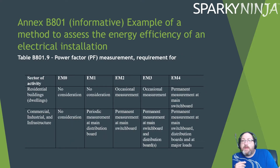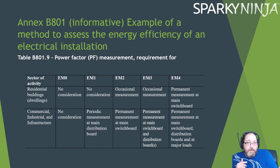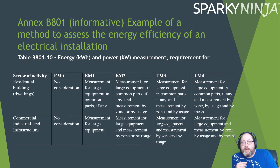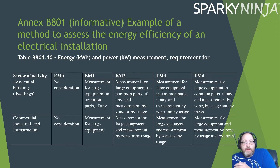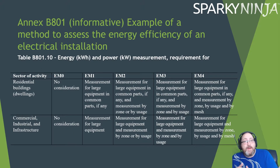For power factor measurement: permanent measurement at the main switchboard gets a four; occasional measurement gets a three or two. For energy (kWh) and power (kW) measurement: measurement of large equipment and common parts gets lower scores, while measurement by zone, by usage, and by mesh gets a four.